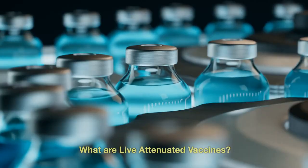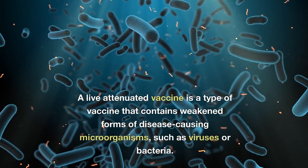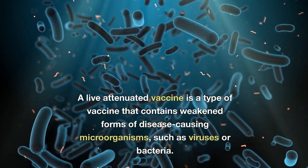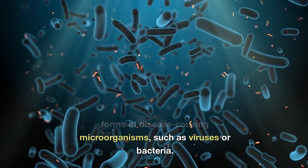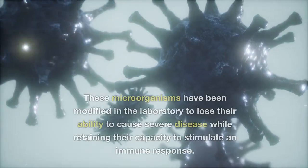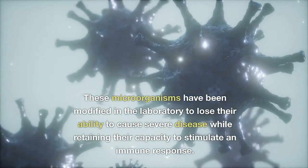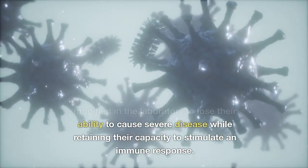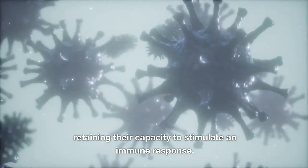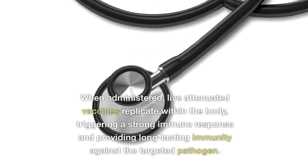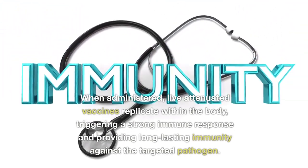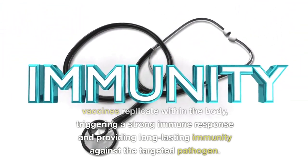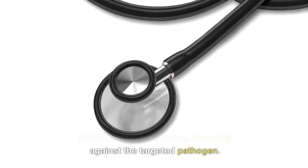What are live attenuated vaccines? A live attenuated vaccine is a type of vaccine that contains weakened forms of disease-causing microorganisms, such as viruses or bacteria. These microorganisms have been modified in the laboratory to lose their ability to cause severe disease while retaining their capacity to stimulate an immune response. When administered, live attenuated vaccines replicate within the body.